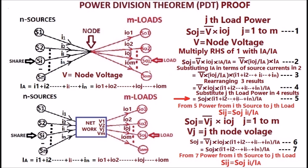Equation 5: SOJ multiplied with the sum of source currents divided by the total source current i-a, as shown in equation 5. From equation 5, power from the i-th source to the j-th load, Sij, is equal to the j-th load power SOJ multiplied with the i-th source current i-i divided by the total source current i-a, which is the expression for the Power Division Theorem.